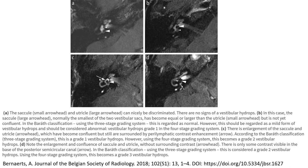Image D: note enlargement and confluence of the saccule and utricle without surrounding contrast. There is only some contrast visible in the base of the posterior semicircular canal. Using the Gibson classification three-state grading, this is considered grade 2 vestibular hydrops. Using the four-state grading system, this becomes grade 3 vestibular hydrops.